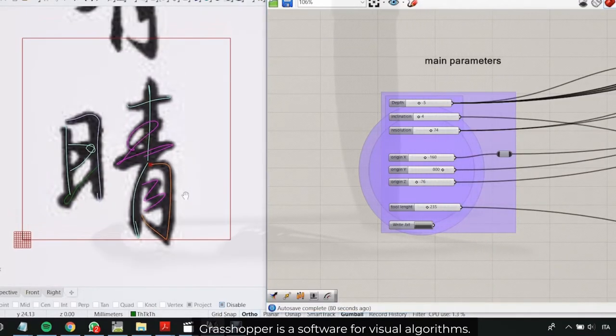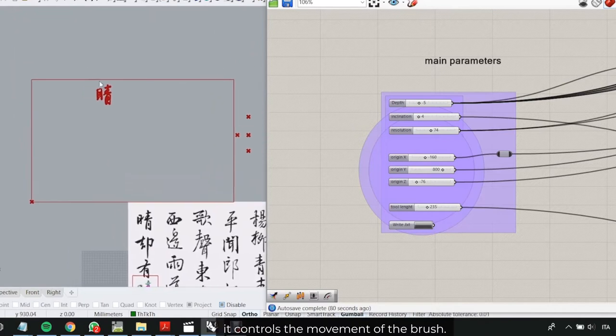Grasshopper is a software for visual algorithms. In this case, it controls the movement of the brush.